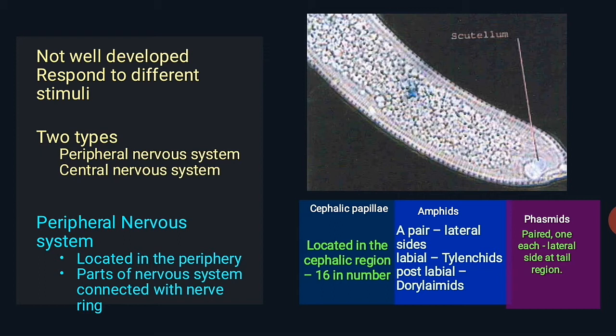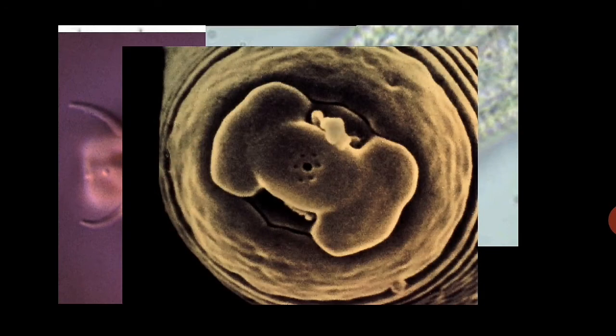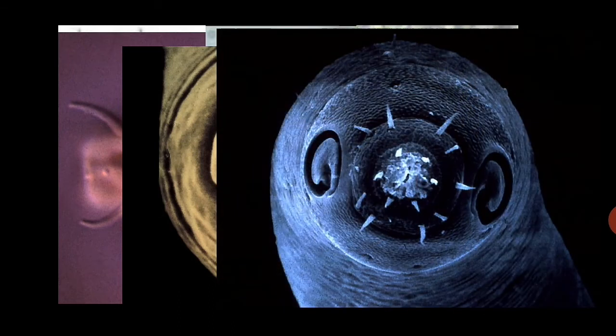Phasmids function as chemoreceptors, mechanoreceptors, and thermoreceptors. The amphid apertures occur in different shapes: cylindrical, horseshoe, pore-shaped, unispiral, multispiral, circular, etc. For example, a multispiral amphid is present in Dorylamopsis, and a pore-like amphid is seen in Meloidogyne hapla J2 stage. A unispiral amphid is present in Desmodora pylosa.